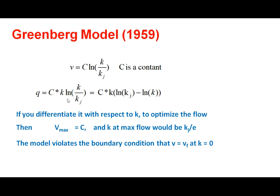Using q = k × v with the logarithmic equation and differentiating to maximize flow, the speed at maximum flow — i.e., at capacity — equals the constant C. Further analysis shows the density at maximum flow is K_J / e, where e = 2.718. However, the only problem with this model is that it violates the boundary condition that at zero density, speed should equal the free flow speed — when K = 0, V becomes infinite.